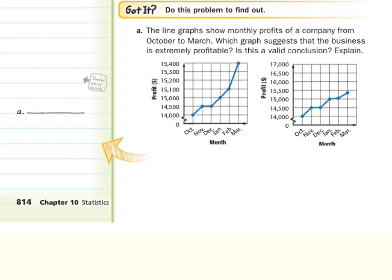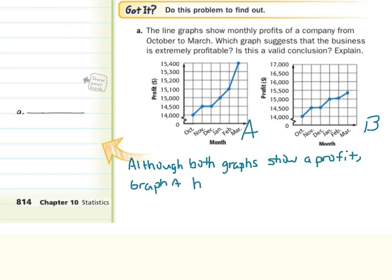So what we can say for this answer is, although both graphs show a profit, we'll call this graph A and this graph B. Graph A has exaggerated profits.